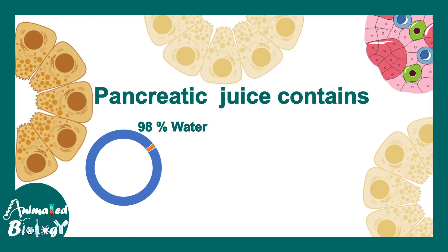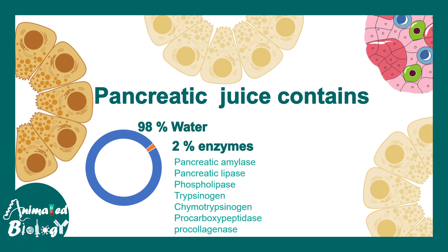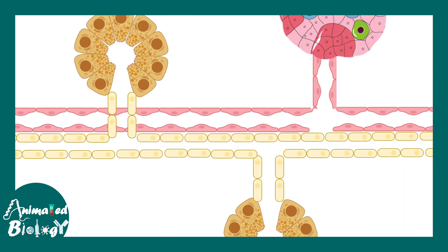Pancreatic juice contains majorly water, but two percent is enzyme — including pancreatic amylase, lipase, phospholipase, trypsinogen, chymotrypsinogen, carboxypeptidase, and procollagenase. Trypsinogen gives rise to trypsin and chymotrypsinogen gives rise to chymotrypsin — they are released in an inactive format to ensure there is no damage within the internal cellular machinery.